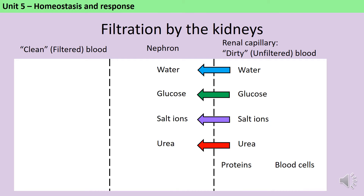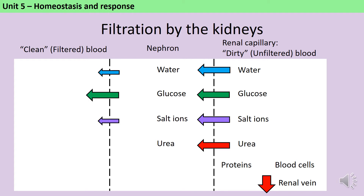Proteins are far too large to pass through that membrane, so they — along with the red and white blood cells and some of the water — continue on into the renal vein. At this point we want to scavenge some of what's been filtered out, because we don't want to urinate out all the water, and we particularly want to get back the glucose because that's a really valuable energy store. Depending on how hydrated or dehydrated you are and what your salt ion levels are, your body will absorb back some of the water and some of the salt ions, plus as much glucose as physically possible, while leaving the urea behind.